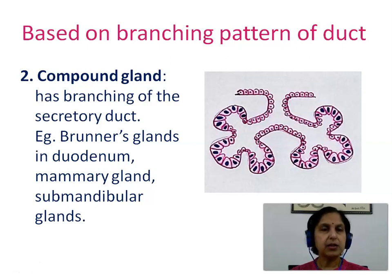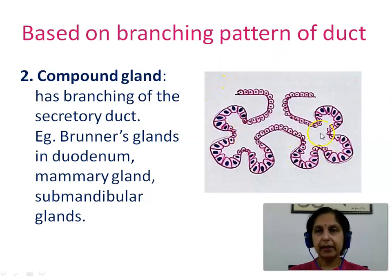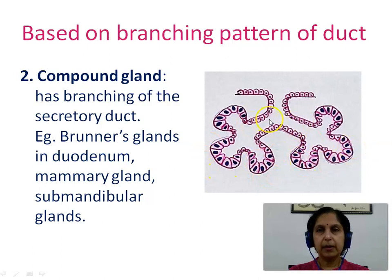A compound gland has branching of the secretory duct. Examples are Brunner's glands in the duodenum, mammary gland, and submandibular glands. As seen in the diagram, the duct is branched — you can see the two branches with the secretory units. Where a branched duct is seen, that is a compound gland.